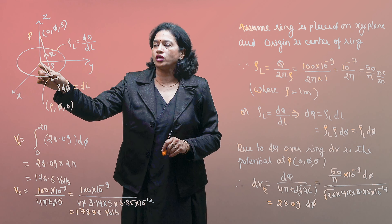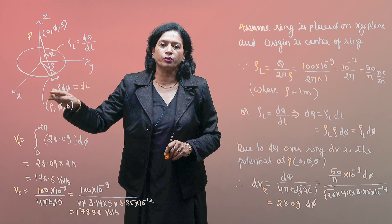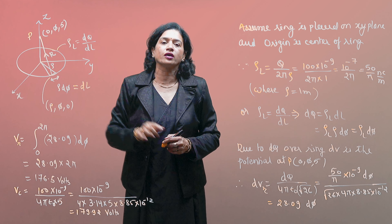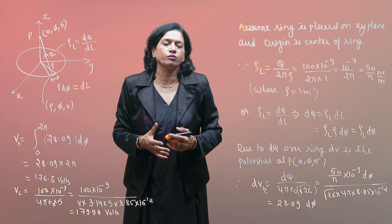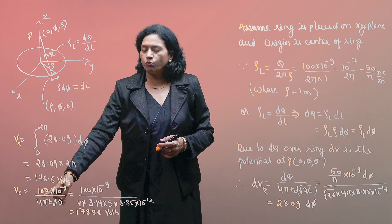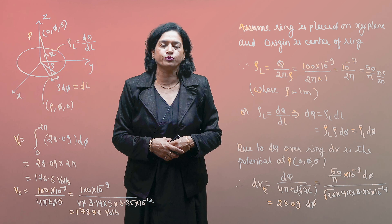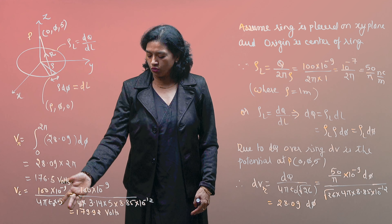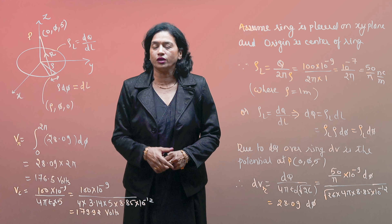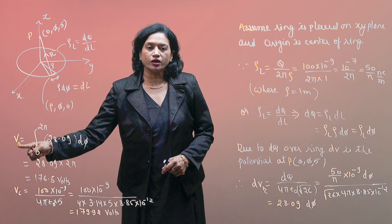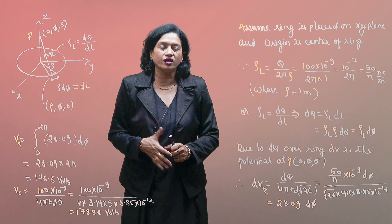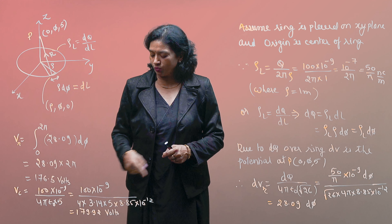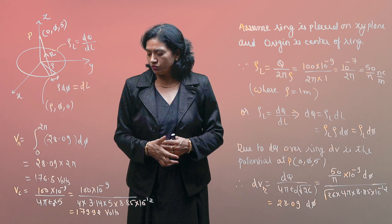The last part of the question asks us to compare with the case where the entire charge is placed at the center of the ring as a point charge. Currently, 100 nanocoulombs is distributed over the ring; now we place it all at the origin. Using the same formula for a point charge, the final value is V_point = 179.92 volts.